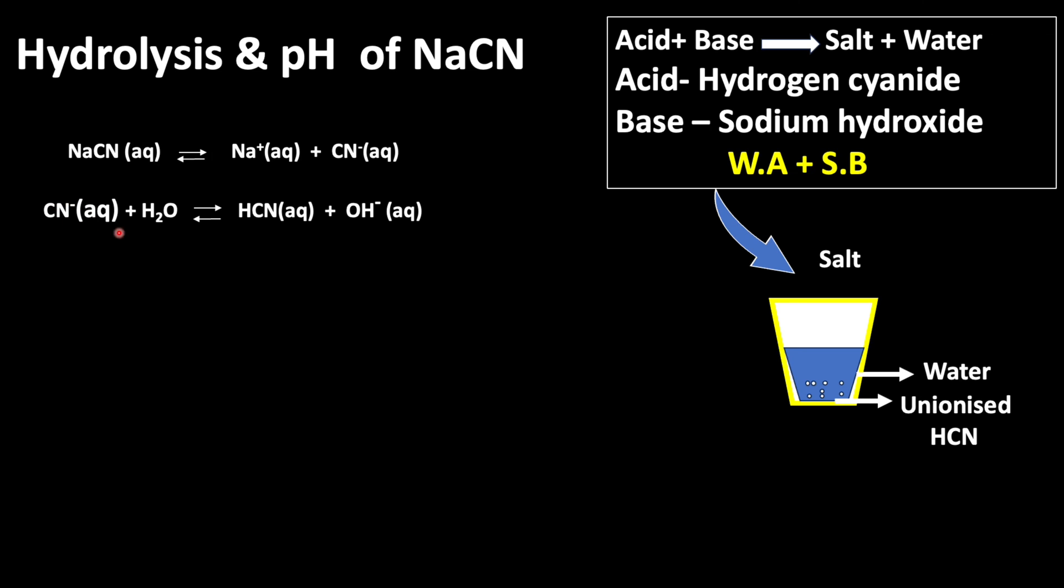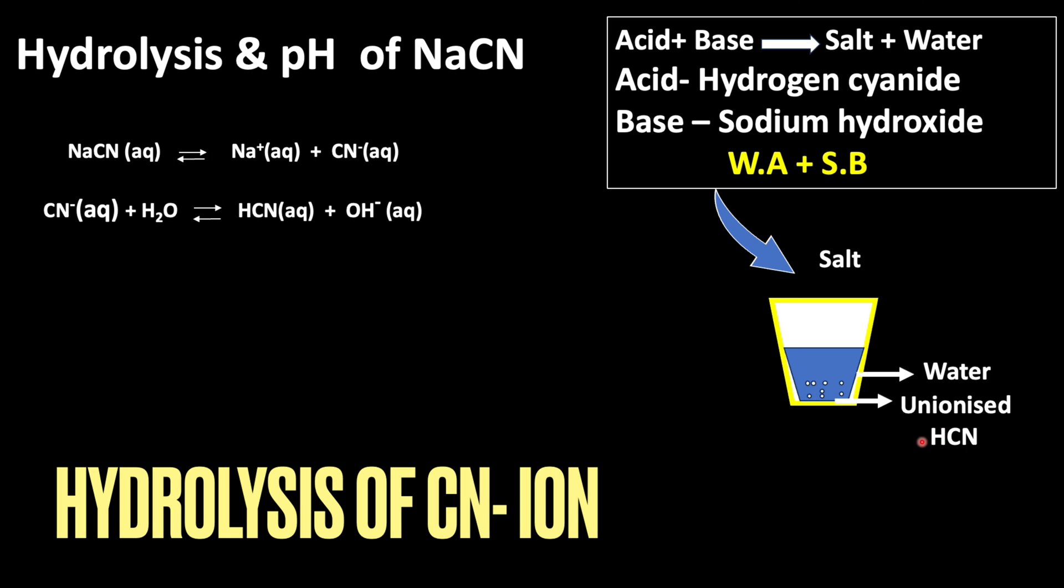So CN- ions when interacting with water molecule form unionized hydrogen cyanide because it is formed from that weak acid. That is why it does not undergo complete ionization, resulting in the formation of OH- ion concentrations in the solution.